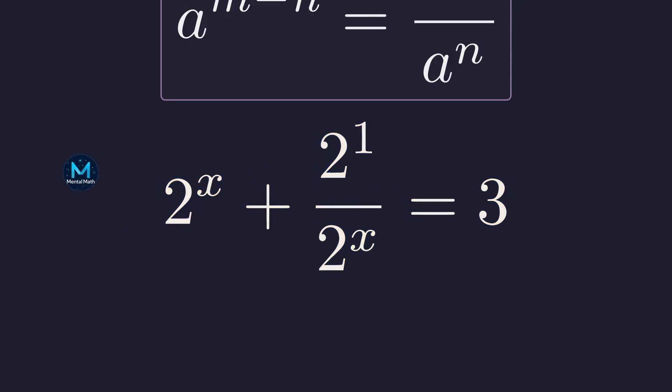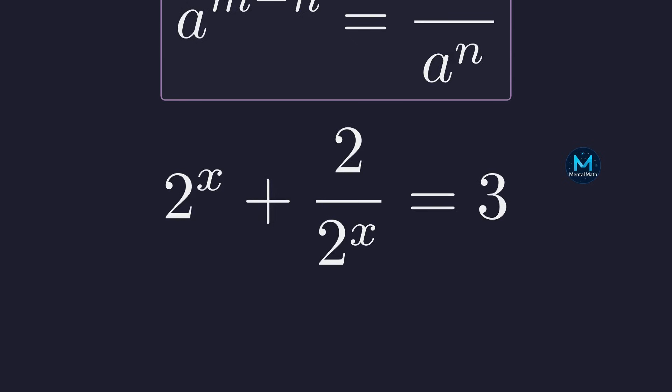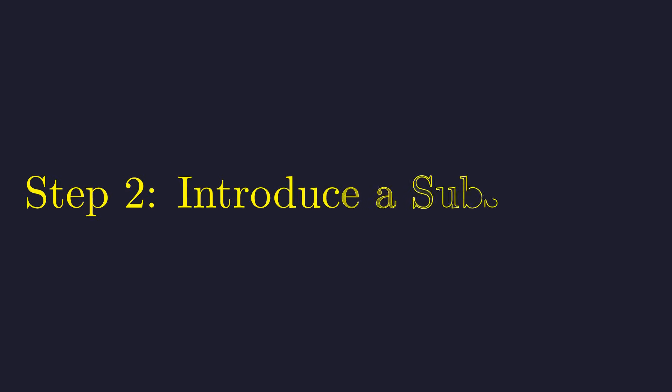Now we can simplify the numerator: 2 to the power of 1. Since 2 to the power of 1 is simply 2, the equation is now fully simplified.